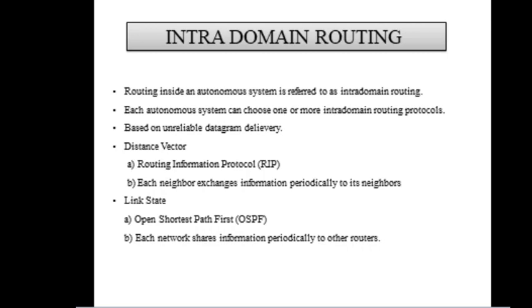Intra-domain routing protocol is defined as the routing inside an autonomous system. Each autonomous system can choose one or more intra-domain routing protocols. Intra-domain routing is based on unreliable datagram delivery. The first type of intra-domain routing is distance vector, which uses the Routing Information Protocol. Each neighbor exchanges information periodically with its neighbor in distance vector routing. The second type of intra-domain routing is link state, which uses the Open Shortest Path First protocol. In link state protocol, each network shares information periodically to other routers.